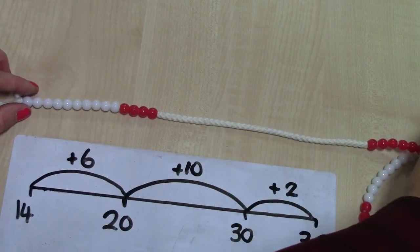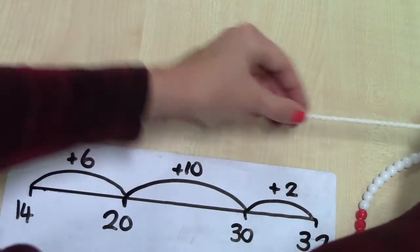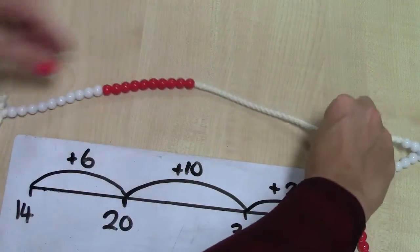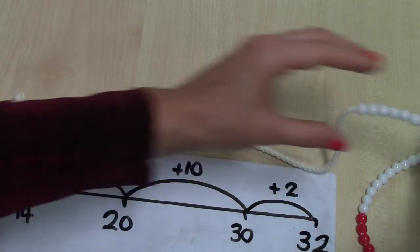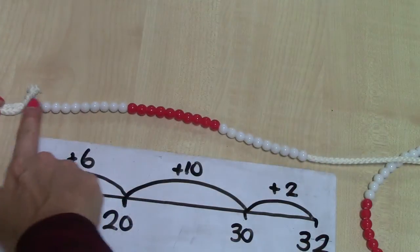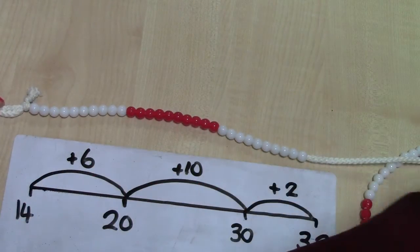We want to get to 32, so we're going to add 6, and that gives us 20. We're going to add another 10, and that gets us to 30.